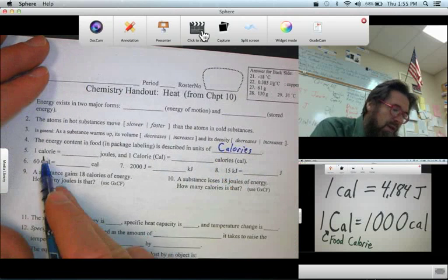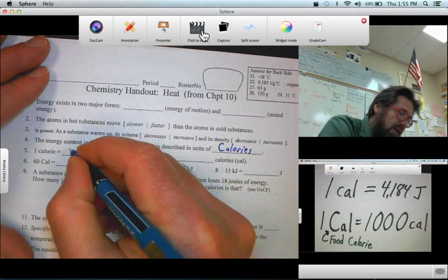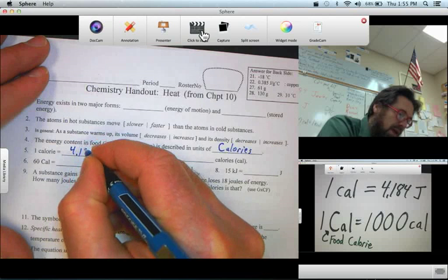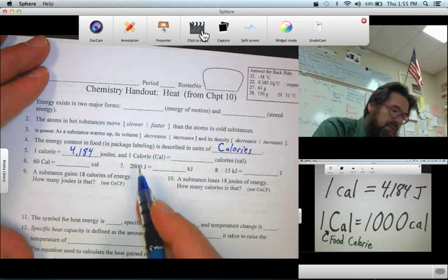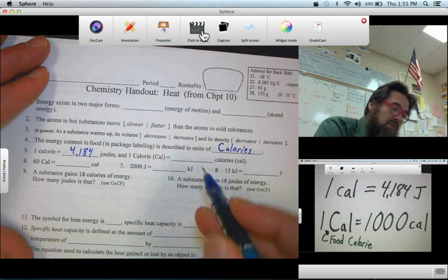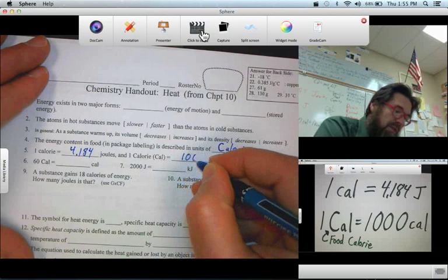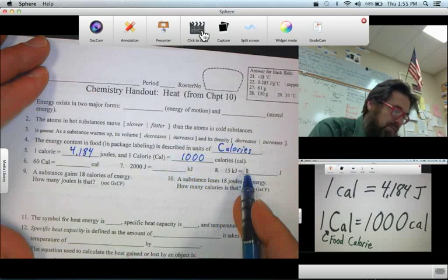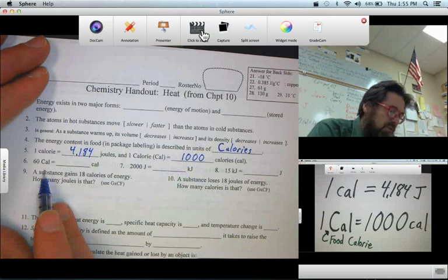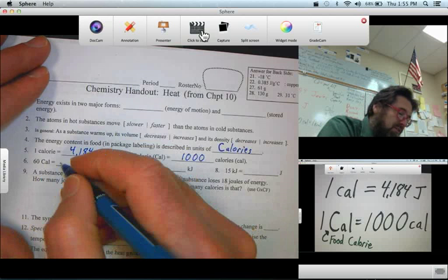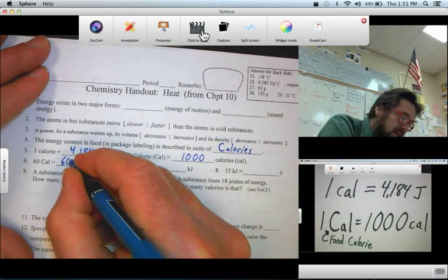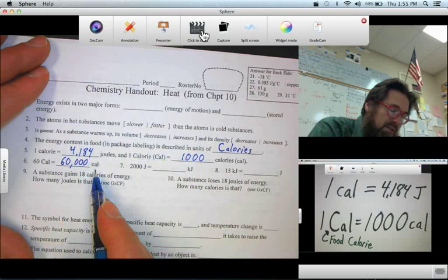One calorie, well, that equals 4.184 Joules. One big C calorie equals 1,000 calories. So, 60 big C calories is, of course, 60,000 chemistry calories, or little c calories.